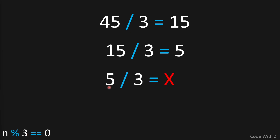Since five mod three is not equal to zero, we stop the division. Because we didn't reach one — we reached five and couldn't divide further — that means 45 is not a power of three, and we return false. This is going to be our approach.